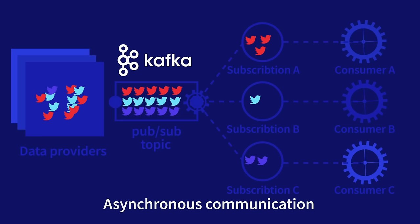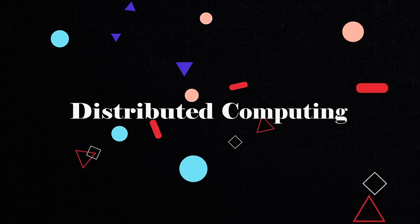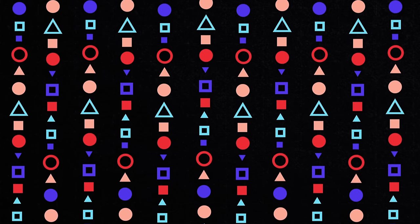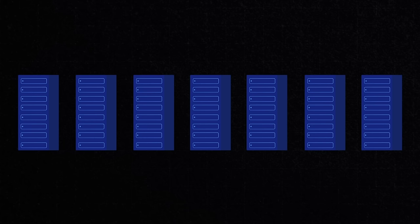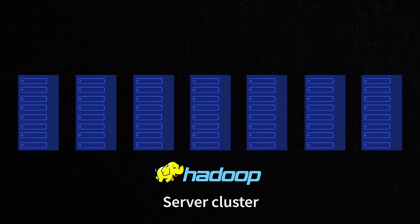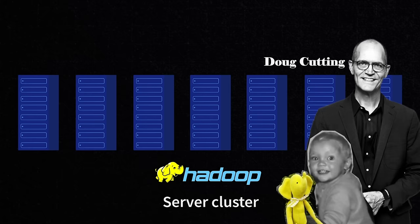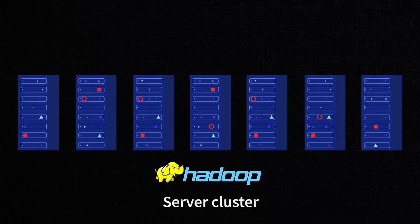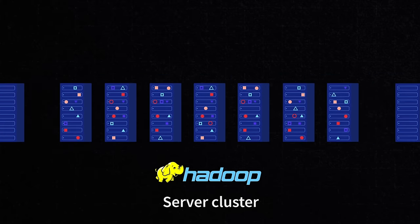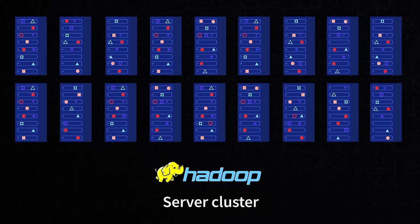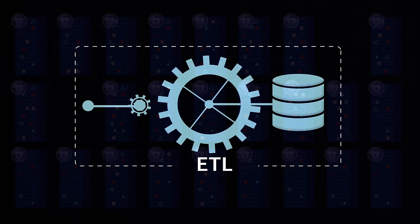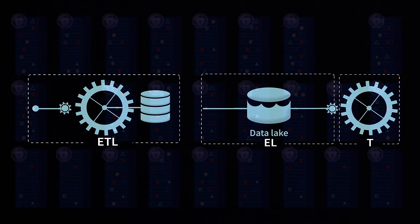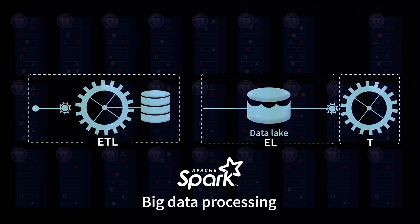Another approach used in big data is distributed storage and distributed computing. You can't store petabytes of data generated every second on a laptop, and you won't store it on a single server — you need several servers, sometimes thousands, combined into what's called a cluster. A common technology for distributed storage is called Hadoop, which means… well, it actually means nothing — just the way a two-year-old called his toy elephant. The boy happened to be the son of Doug Cutting, the creator of Hadoop. Hadoop is a framework that allows storing data in clusters. It's very scalable, meaning you can add more and more computers to the cluster as your data keeps growing. It also has much redundancy for securing information, so even if some computers in the cluster burst into flames, the data won't be lost. ETL and ELT processes require specific tools to operate Hadoop clusters — let's mention Spark, the popular data processing framework capable of this job.